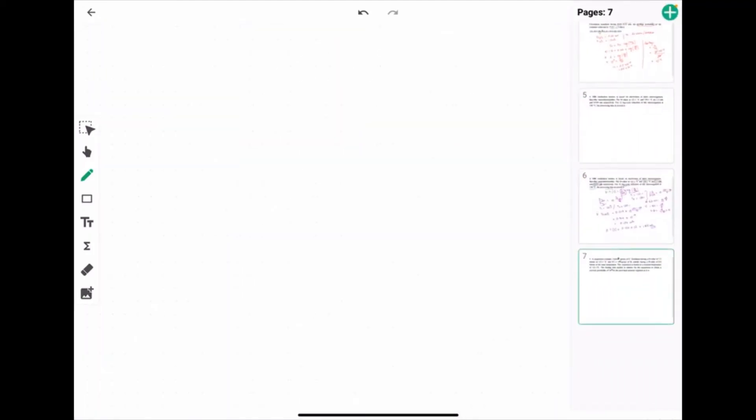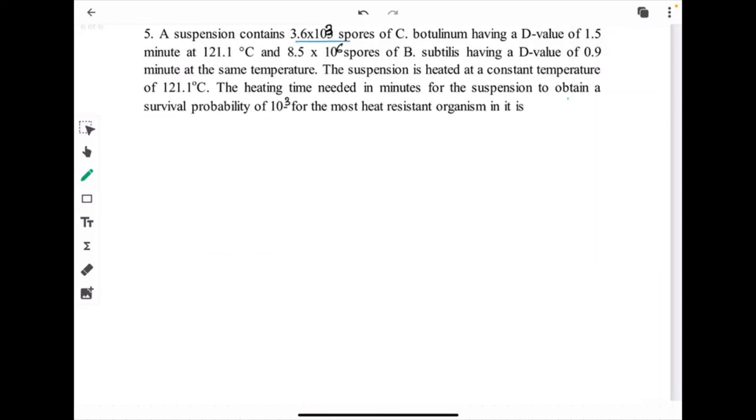Next question is a suspension contains 3.6 into 10 to the power 3 spores of Clostridium botulinum having a D value of 1.5 minute at this temperature, and 8.5 into 10 to the power 6 spores of Bacillus having a D value of 0.9 minute. We have D 121 degree Celsius 1.5 minute and the initial population 3.6 into 10 to the power 3 spores, and similarly another D value at same temperature is 0.9 minute but initial population is 8.5 into 10 to the power 6. The suspension is heated at constant temperature. The heating time needed in minute for the suspension to obtain a survival probability of 10 to the power minus 3 for the most heat resistant organism. Final value is given 10 to the power minus 3.